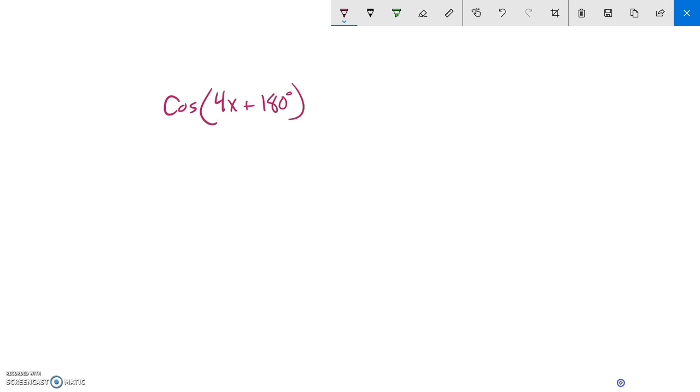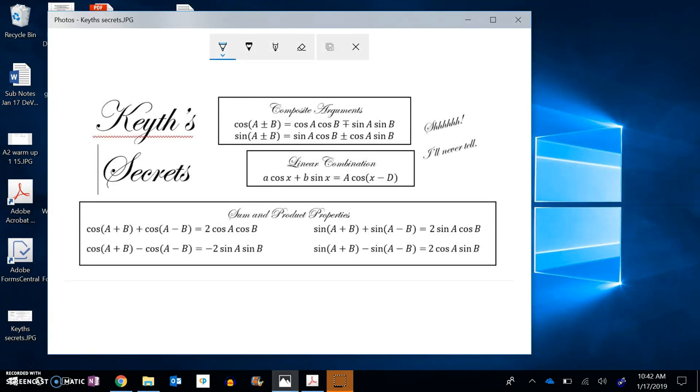So it's cosine of something plus something. Let me see what old Keith has to say. Cosine of something plus something. That's this expansion right here. So I know it's cosine of the first, cosine of the second, opposite operator, sine of the first, sine of the second.